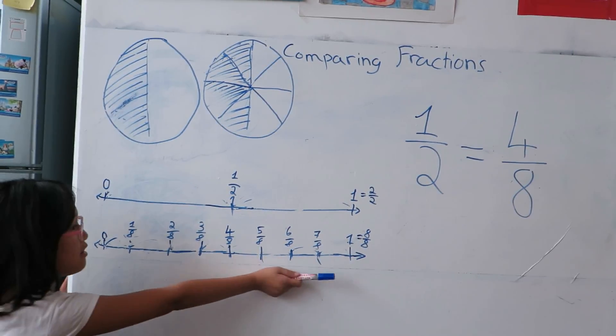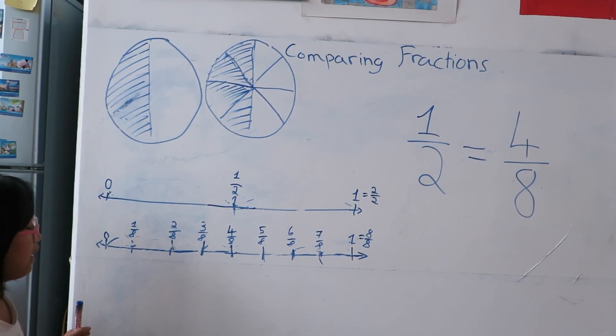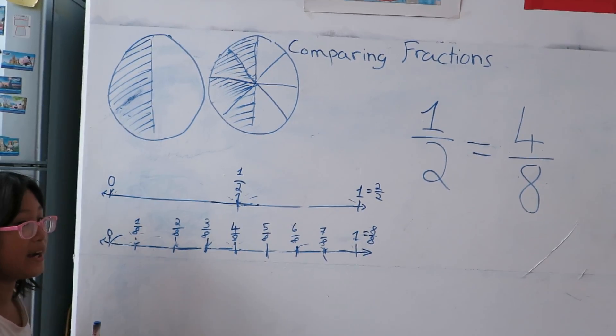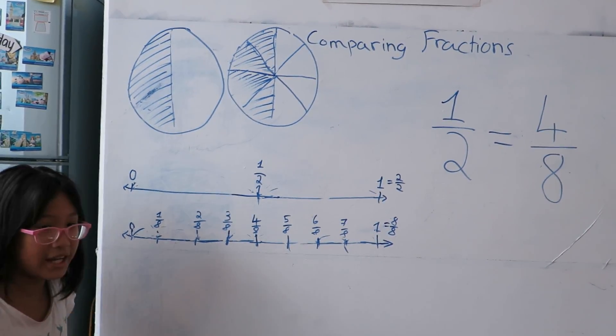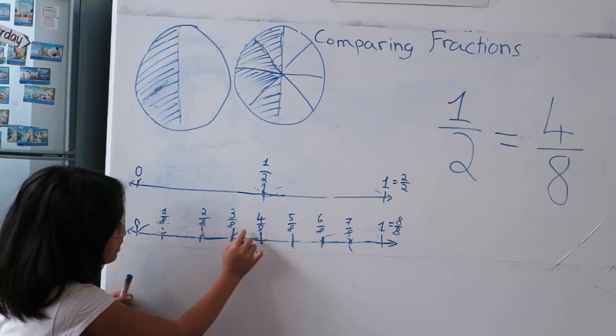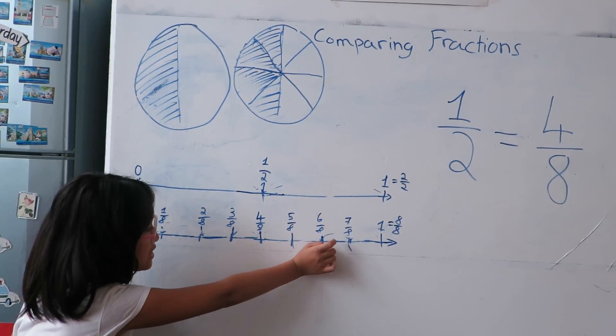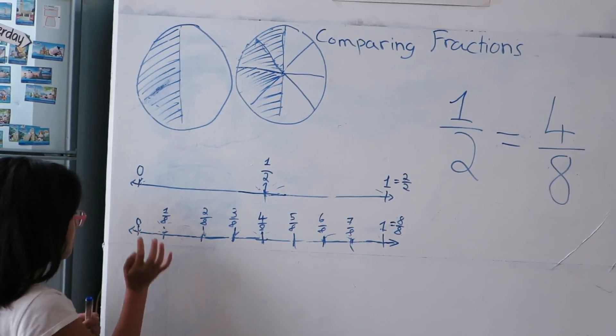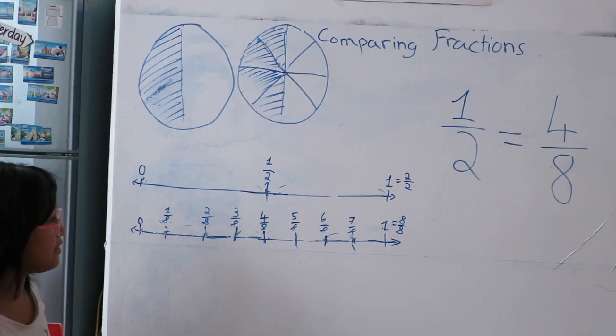And here, from zero to one whole cake, I divided this whole cake into one eighth, two eighths, three eighths, four eighths, five eighths, six eighths, seven eighths, eight eighths—eight equal parts.